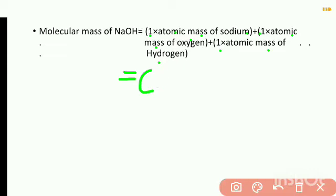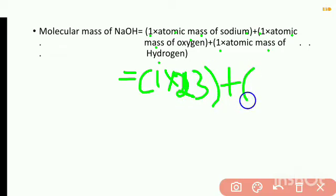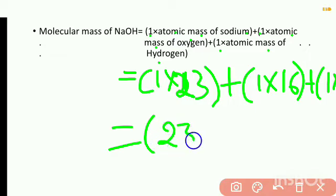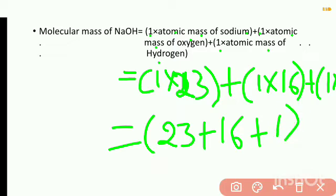Substituting values here: number of sodium atoms is 1, atomic mass of sodium is 23; plus number of oxygen atoms is 1, atomic mass of oxygen is 16; plus 1 × 1. This equals 23 plus 16 plus 1, which is equal to 40 atomic mass units.